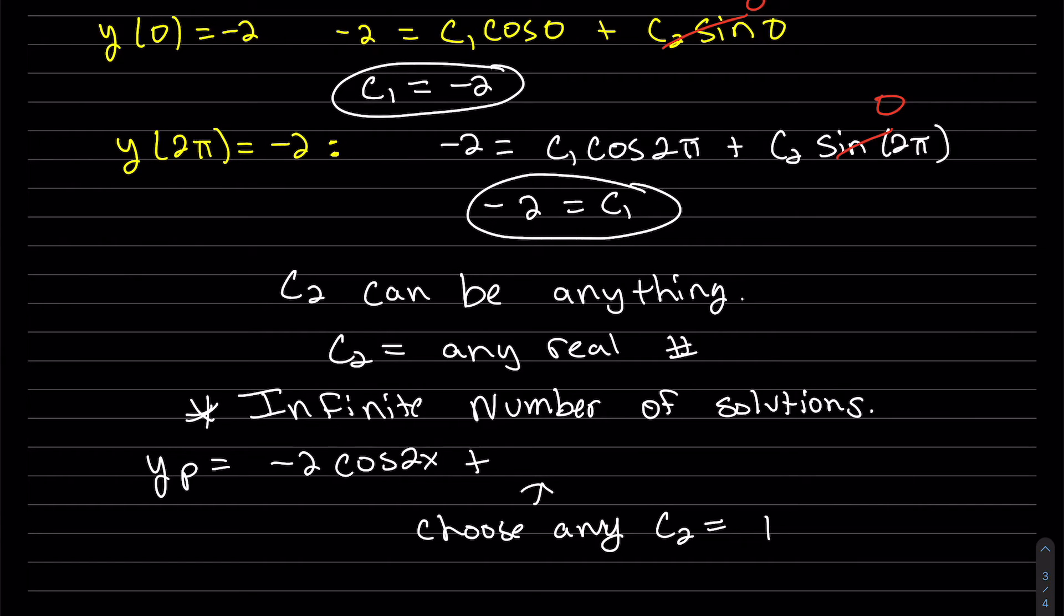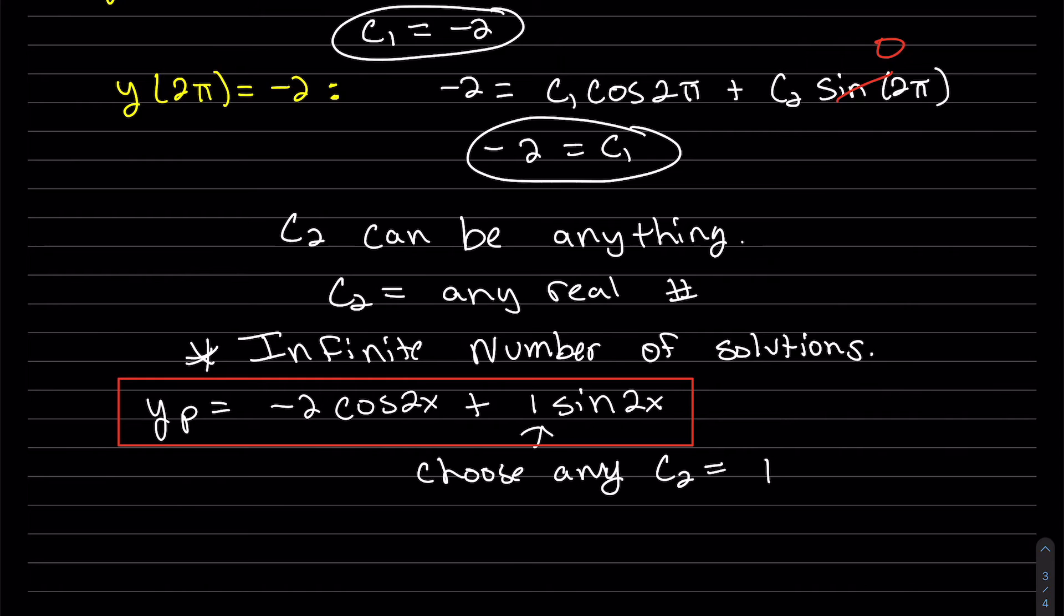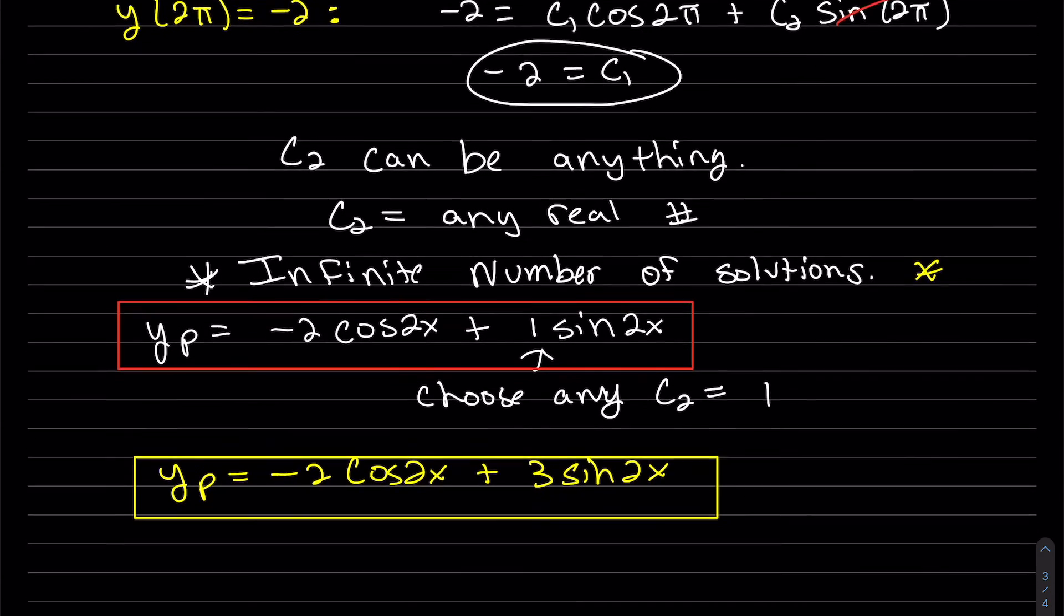And then... Yeah, so a particular solution cannot have a constant in there. You've got to actually pick one. But that would be one. Another particular solution that satisfies it. Just pick another one. So these both work. Because there's an infinite number of solutions.